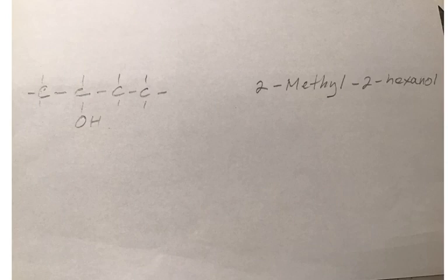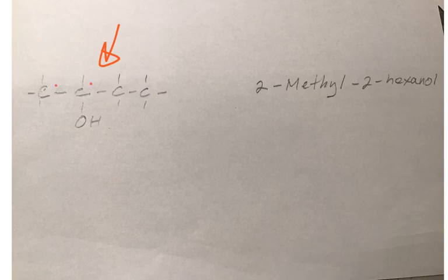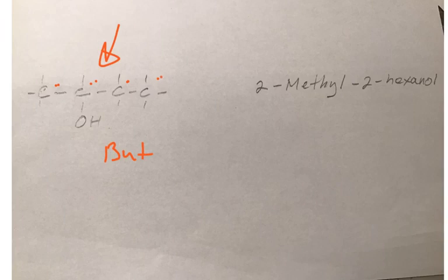Alright, so we have this structure right here, and we're asked to name it. The first thing you do, you count the longest number of carbons. You see you have one, two, three, four carbons. What's the prefix of four? The prefix of four is bute. And it's all single bonds, so normally we would say butane.